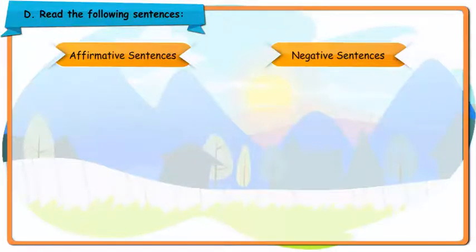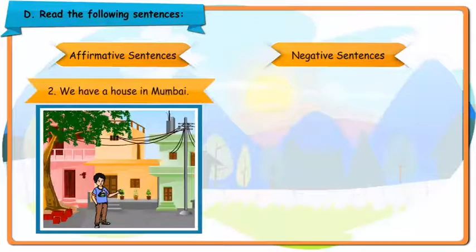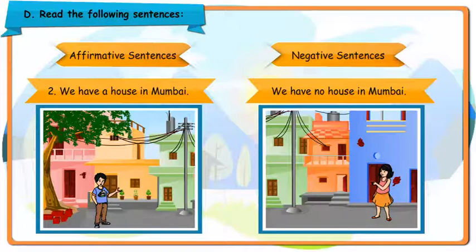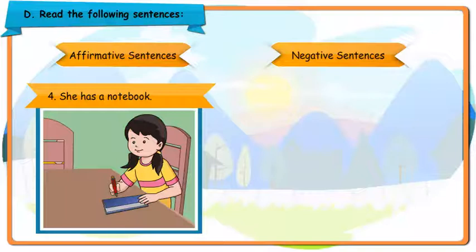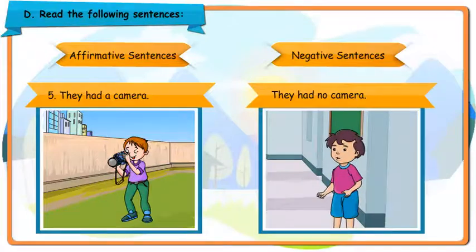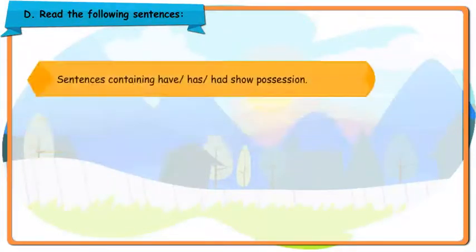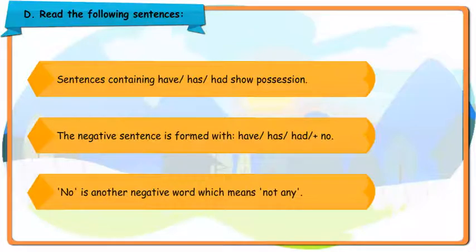Affirmative Sentences, Negative Sentences. I have a computer. I have no computer. We have a house in Mumbai. We have no house in Mumbai. He has a sister. He has no sister. She has a notebook. She has no notebook. They had a camera. They had no camera. Sentences containing have, has, or had show possession. The negative sentence is formed with have, has, or had plus 'no'. 'No' is another negative word, which means 'not any'.